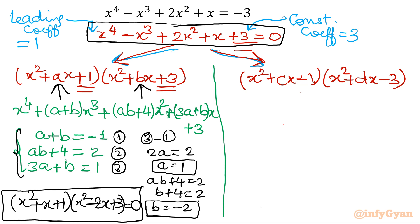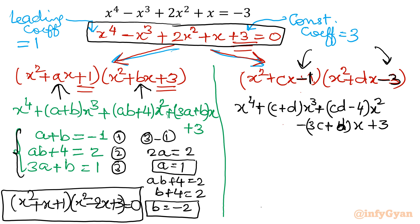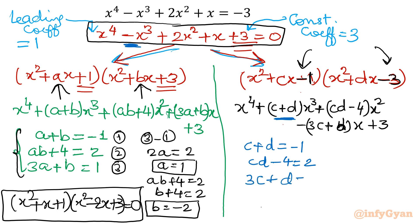Now for the second case, where both constant terms are negative: (x² + cx − 1)(x² + dx − 3), since −1 times −3 is also +3. Expanding and comparing coefficients with the original equation gives: c + d = −1, cd − 4 = 2, and 3c + d = −1.